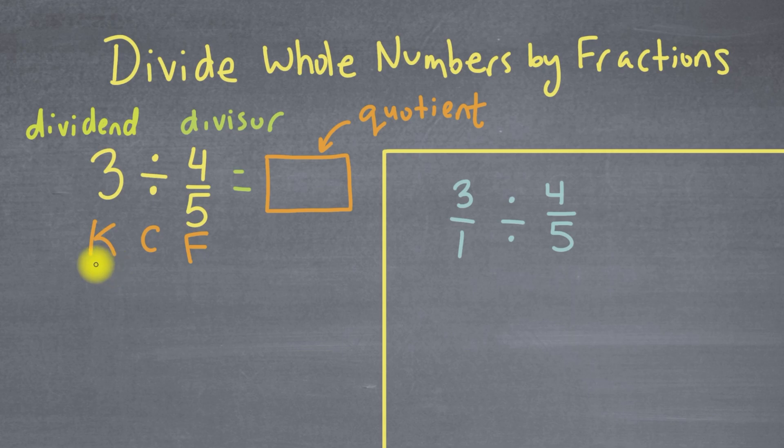So again, what we're going to have to do is use keep, change, flip. Our first fraction here, we're going to keep. So let's put a K for keep. And that just means 3 over 1 we're going to keep as 3 over 1.